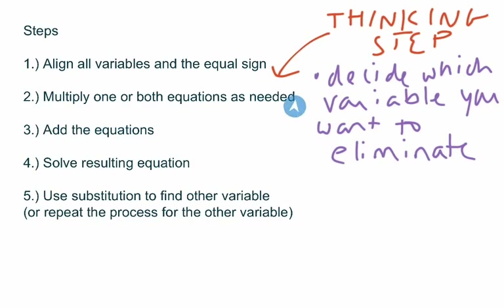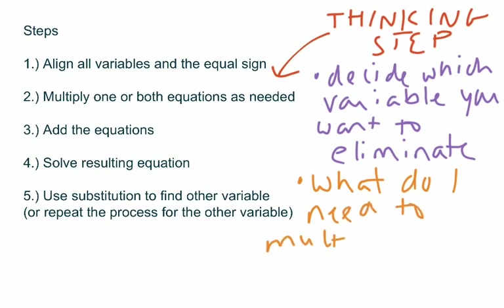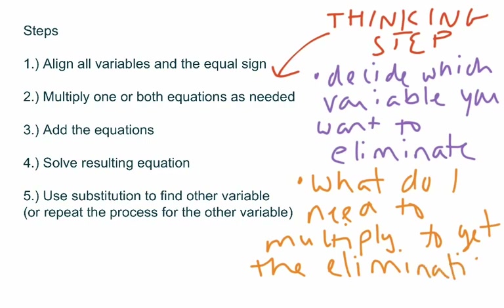It says multiply one or both as needed. It's possible that you might not need to multiply either of them — it could come ready-made to jump all the way to step three, which is nice. But once you decide what variable to eliminate, you have to ask yourself: what do I need to multiply by to get the elimination? Because when you add them, you're going to eliminate a variable, but you might need to multiply by something first to make that happen. Both of these require you to think through the problem and make some decisions, and there's not one right way to do it.